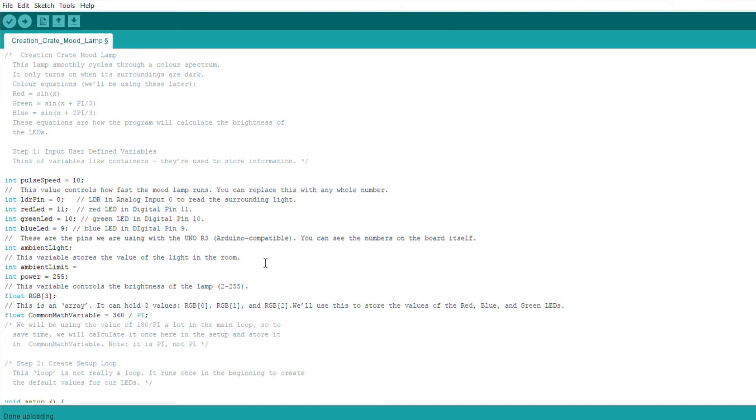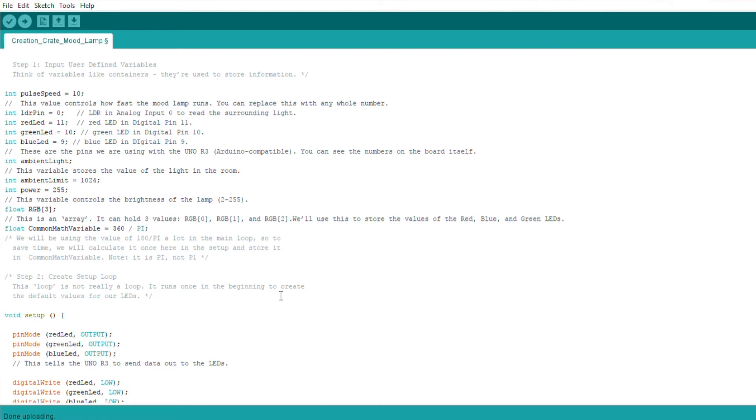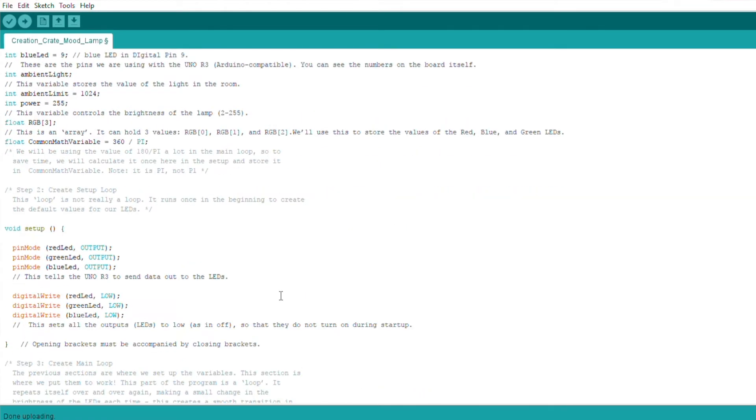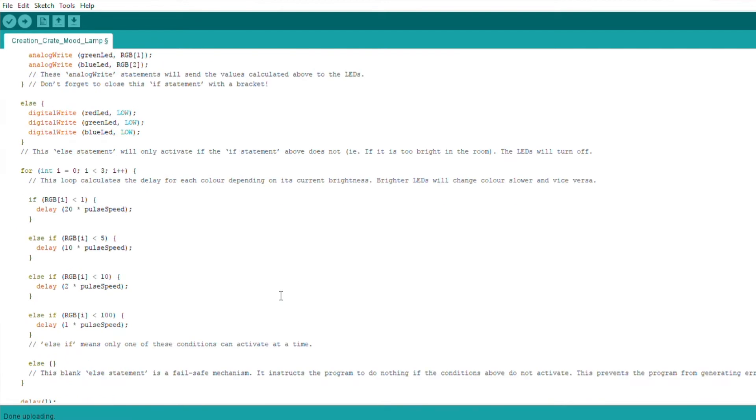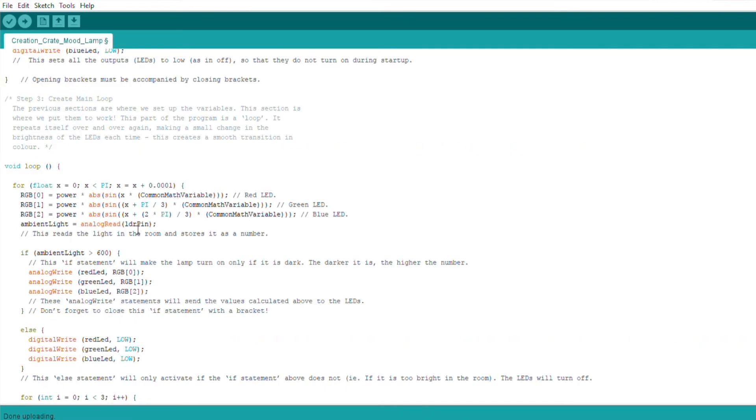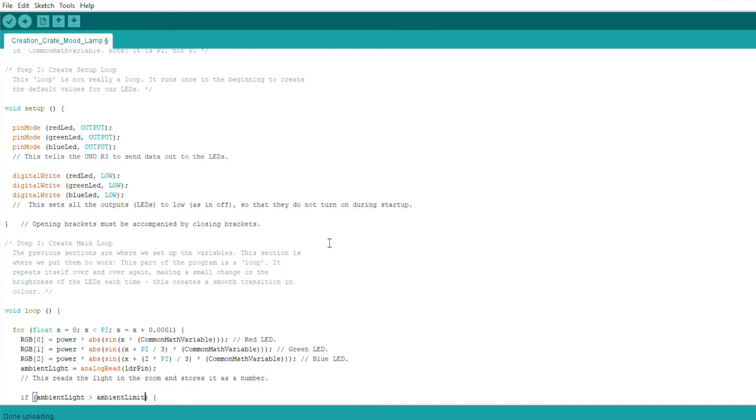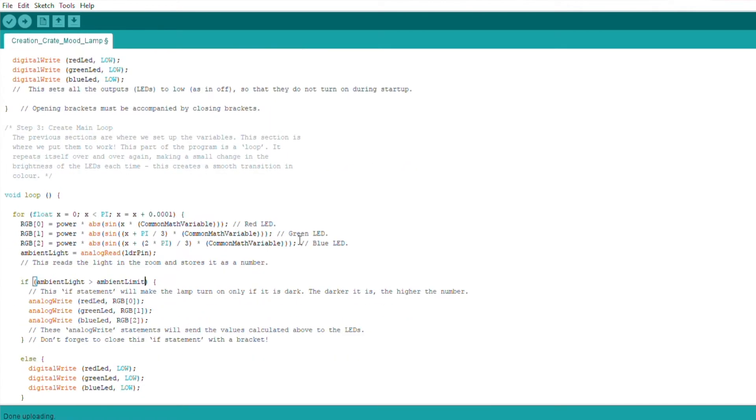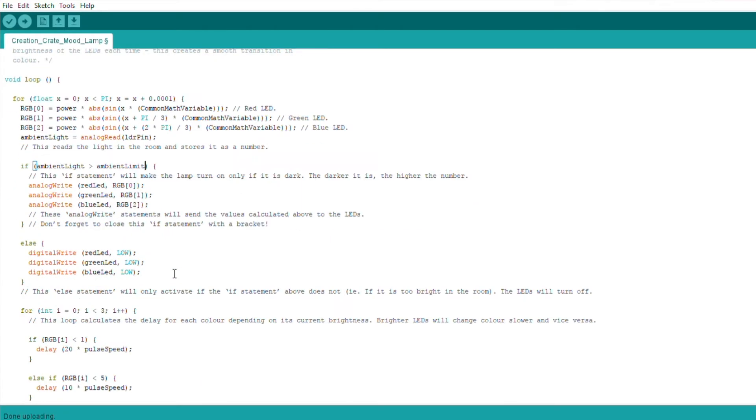Alrighty, so let's see. We need to go up to where we declare our variables right up here. We've got ambient_light. This variable stores the value of the light in the room. So we're going to do int and we want to call it ambient_limit. And we do want to make it equal something, so we're going to make it equal... ambient_limit can range for 1024. So 1024, I guess I'll go for the maximum here.